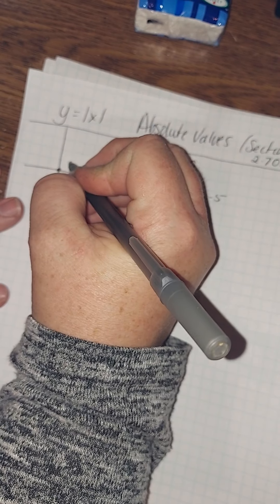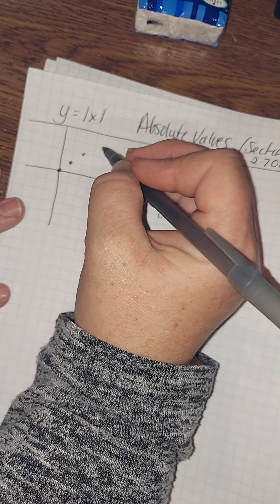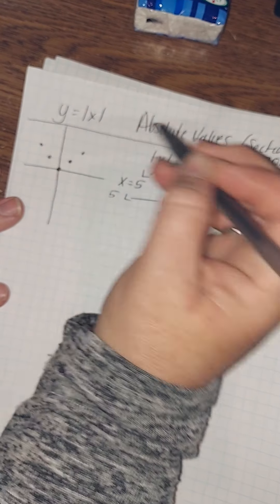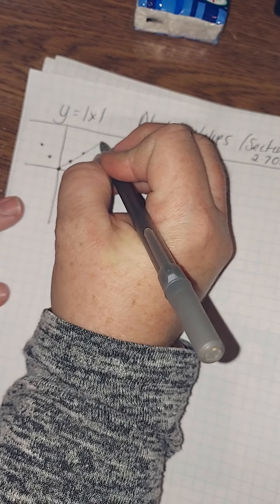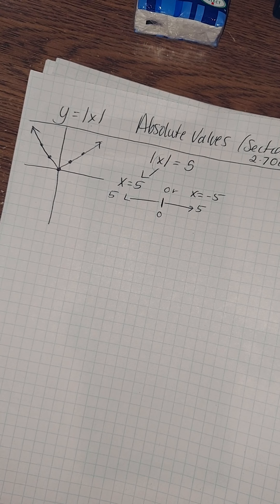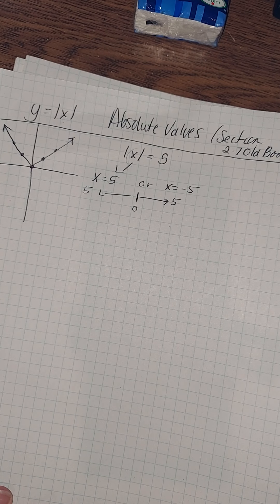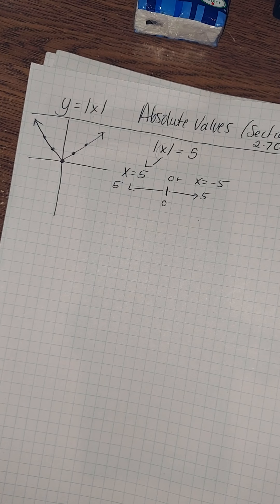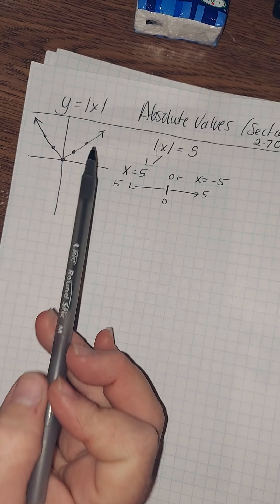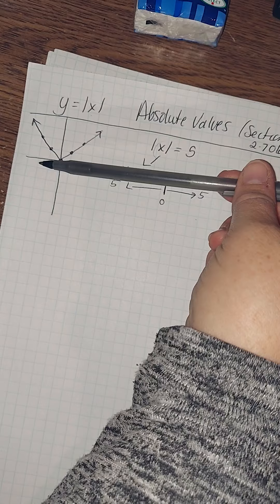The absolute value of 1 is 1, the absolute value of 2 is 2. And what you do to one side, you do to the other because the absolute value of a negative 1 is 1. The absolute value of a negative 2 is 2. And so these form V's. So pretty easy. If we think about domain and range, your domain would be all real numbers because it goes forever this way. And then your range value would be 0 and above.